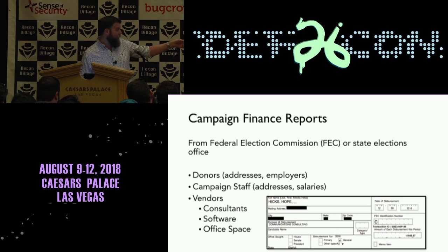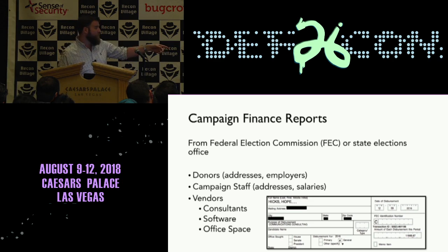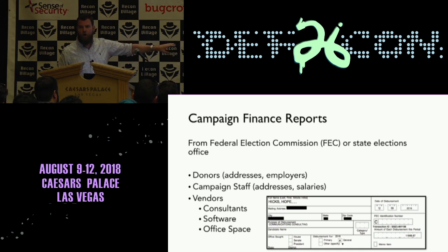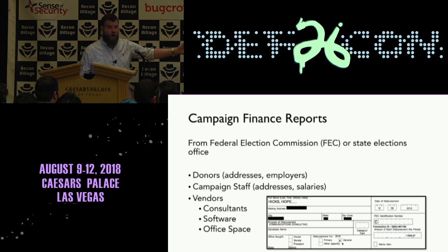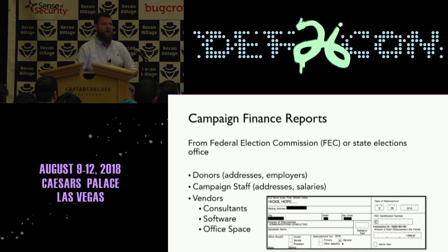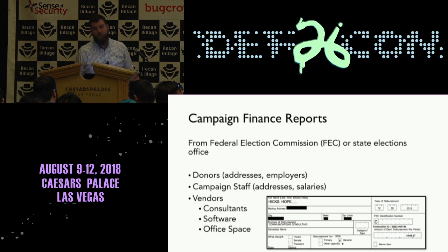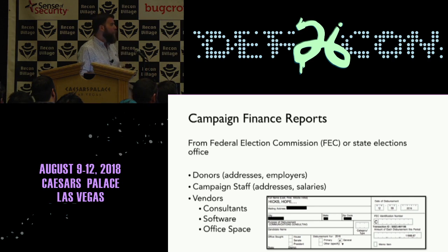This is an example of Hope Hicks, who was President Trump's communications director. I redacted out her home address, but all the personal addresses for all of the campaign staff are going to be on their record. Some campaigns do make some effort to minimize that sort of personal disclosure, but for the most part that information is going to be out there, along with how much the individual is getting paid. You also get a list of vendors for a political campaign — all of their consultants, what software they're using, where they're renting office space, and who they're renting office space from.